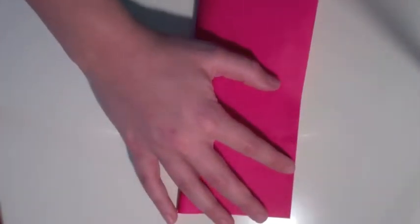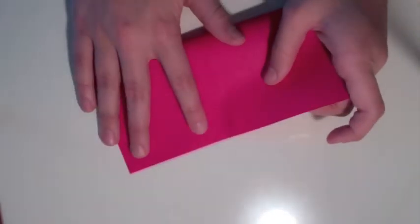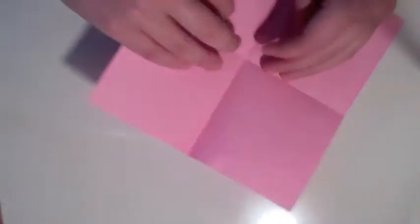To start off with, you want to make a square base. You do that by folding it in half both ways. Now you should have somewhat of a cross in the middle.